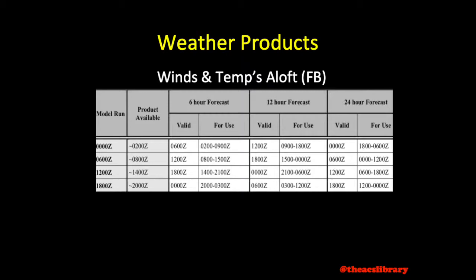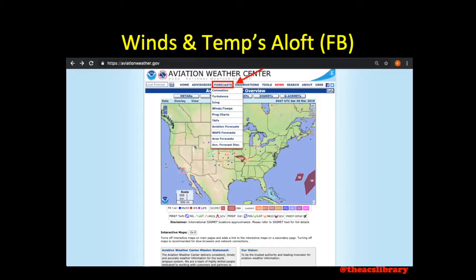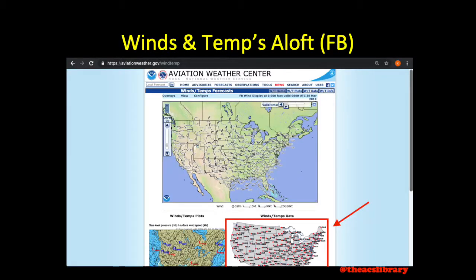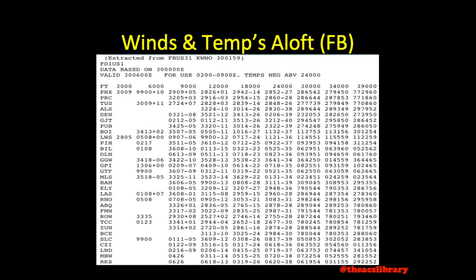We will begin with the textual depiction of winds and temperatures aloft. To access winds and temperatures aloft for your route, go to AviationWeather.gov, press the Forecast tab, Winds Aloft, and on the black and white map with red dots in the lower right corner, select the forecast location nearest to your route segment. Once done, a page similar to this one will pop up. I selected Salt Lake City, and we will use this as our example winds and temperatures aloft forecast for this video.